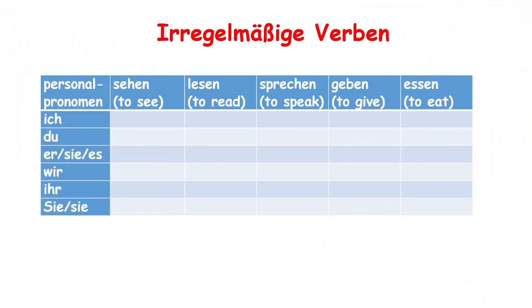Here are some examples of irregular verbs: sehen (to see), lesen (to read), sprechen (to speak), geben (to give), essen (to eat). First of all, we should know that the conjugation of regular versus irregular verbs is a bit different.